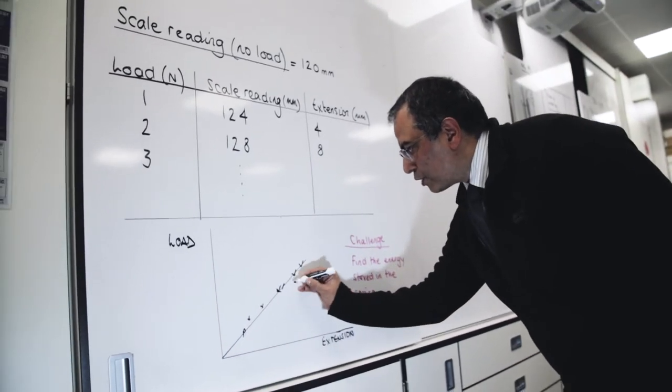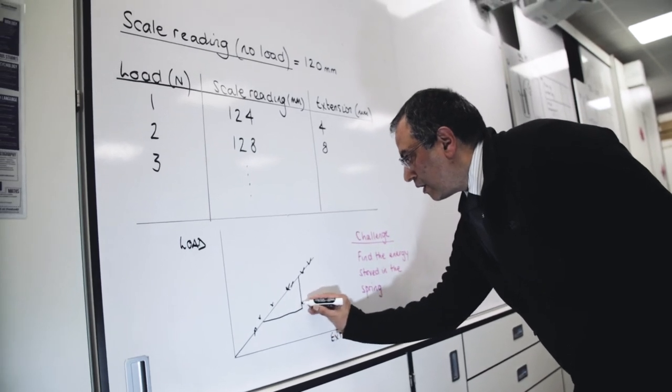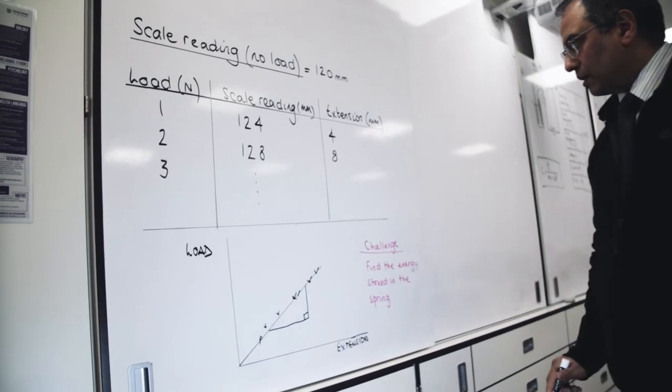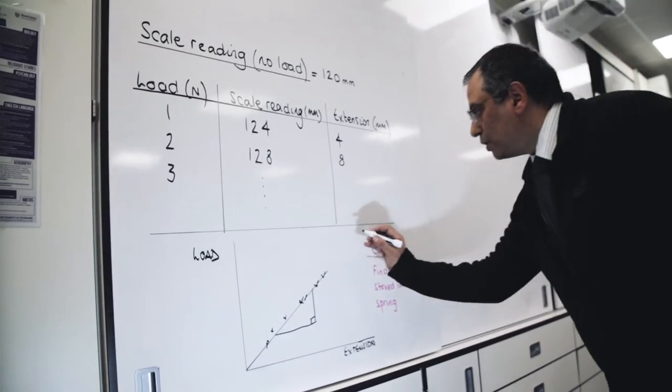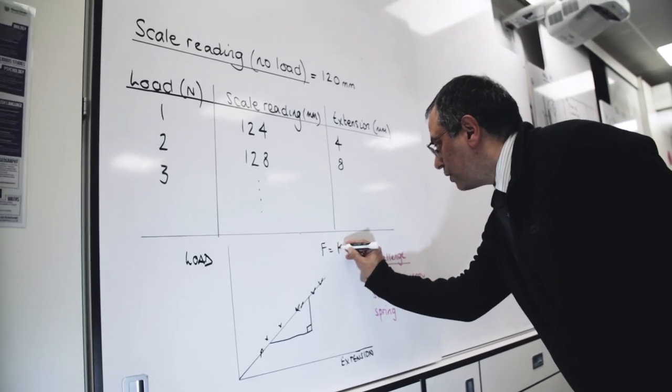If you work out the gradient of this graph, the gradient will allow you to work out the spring constant. And you may be familiar with this expression.